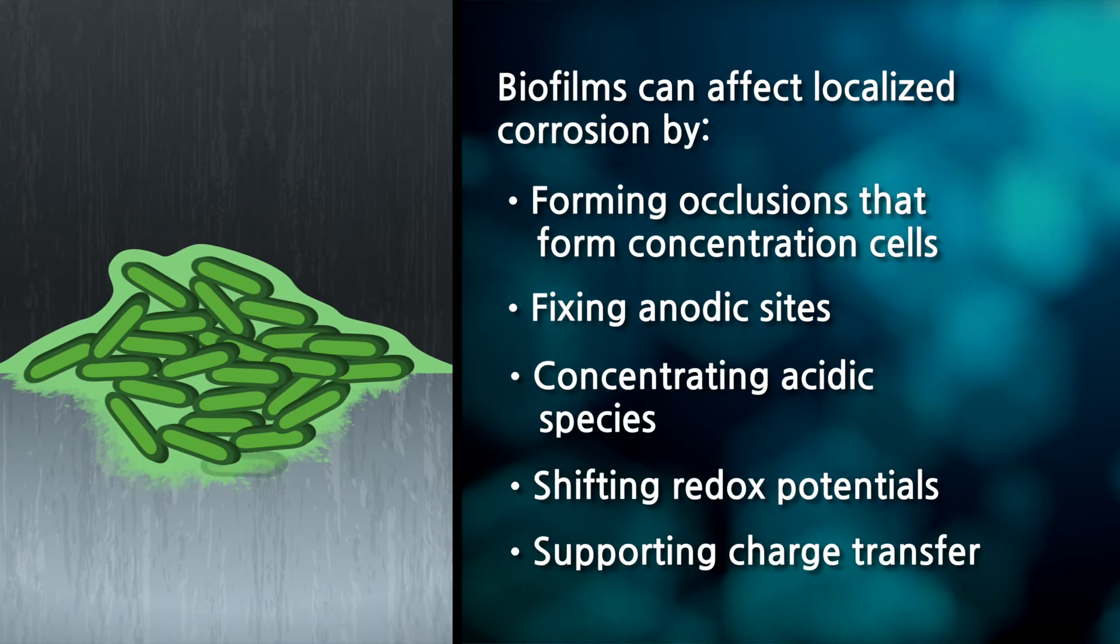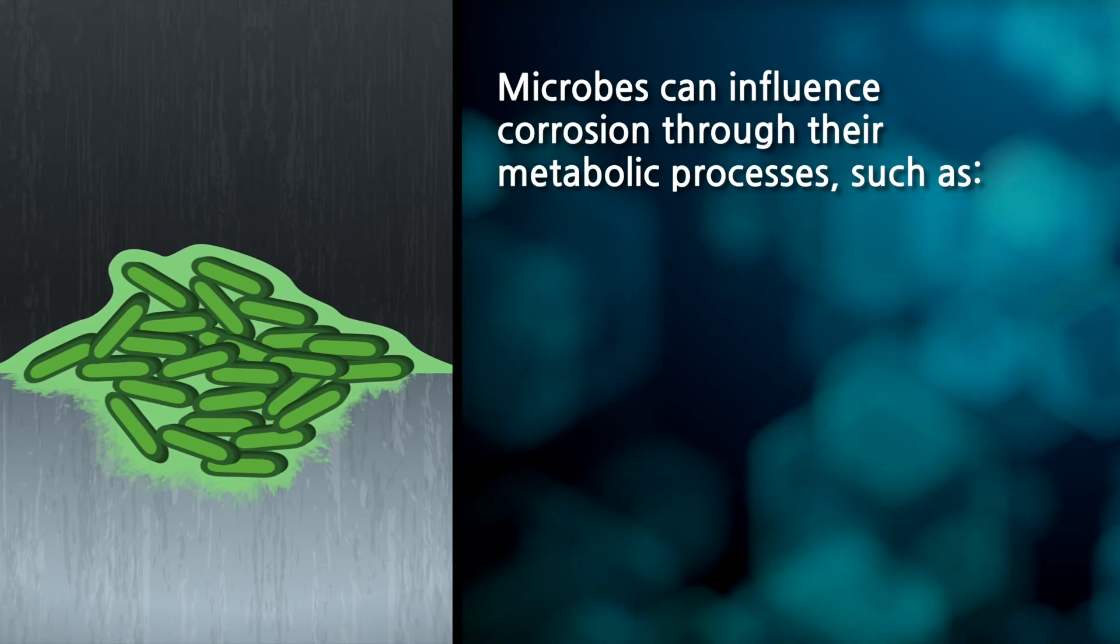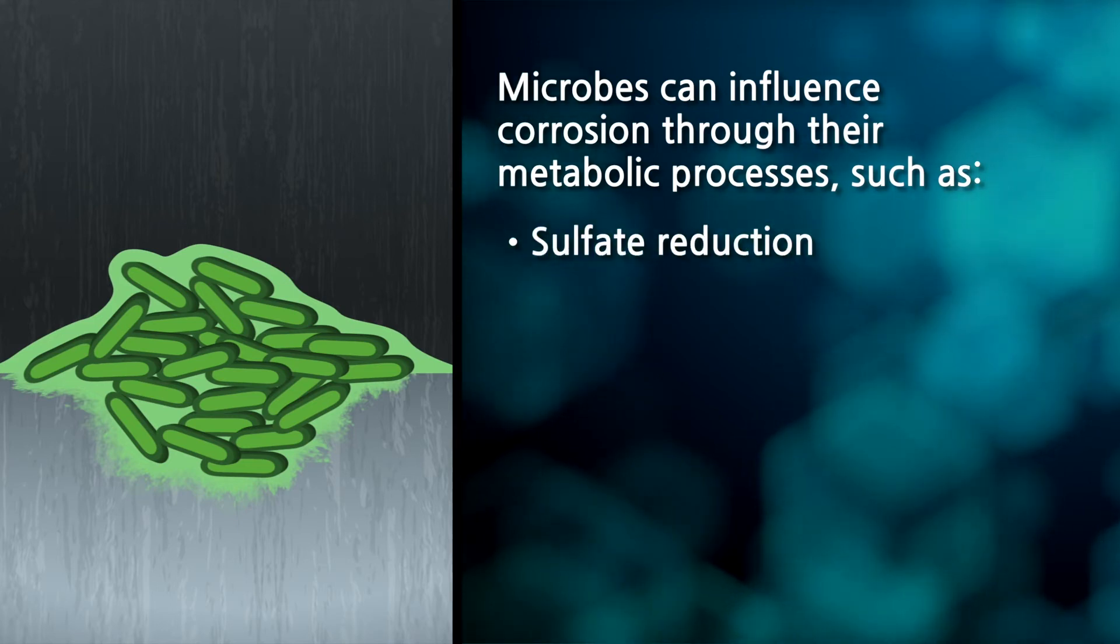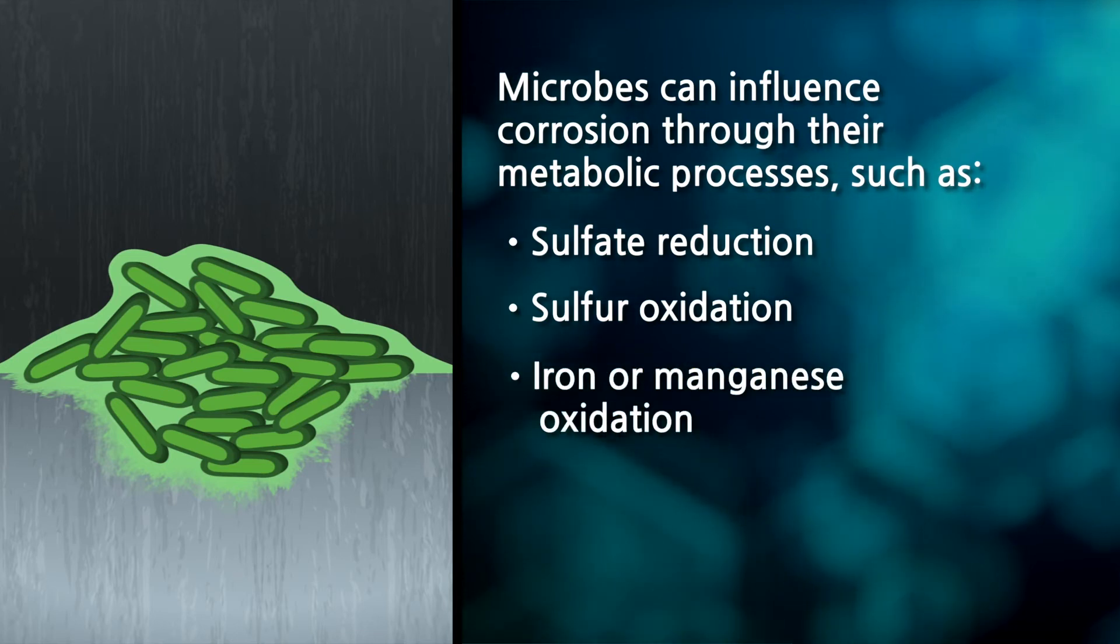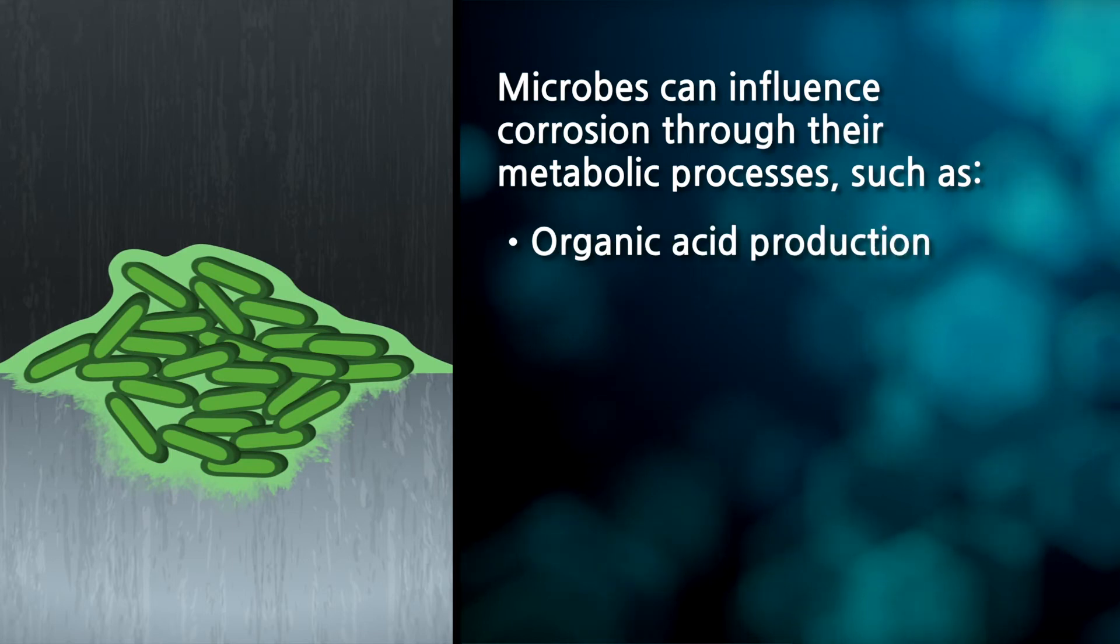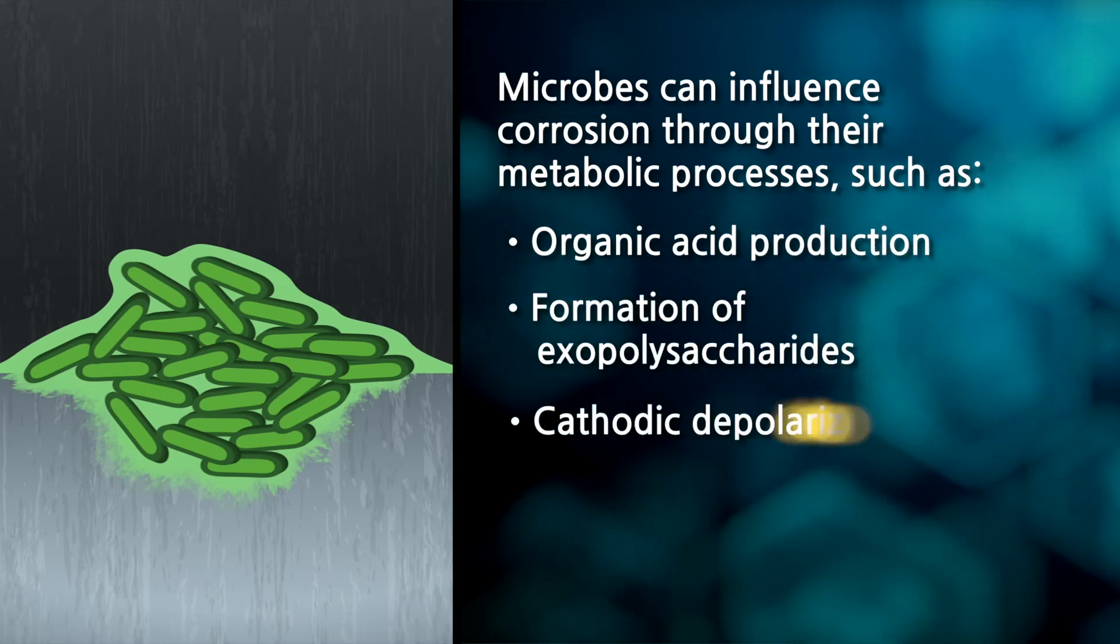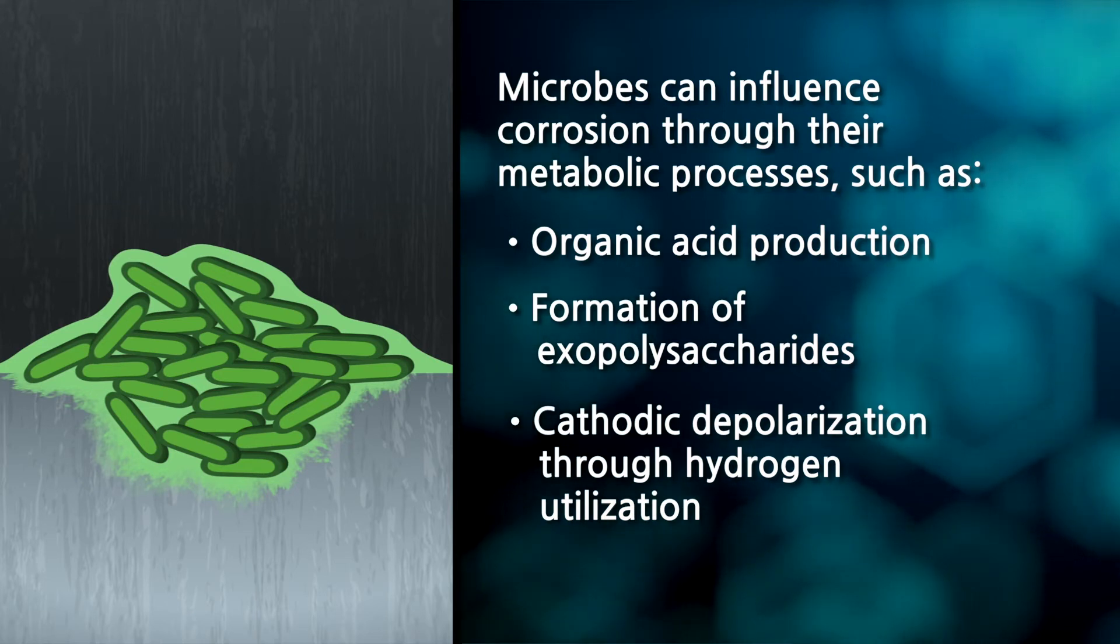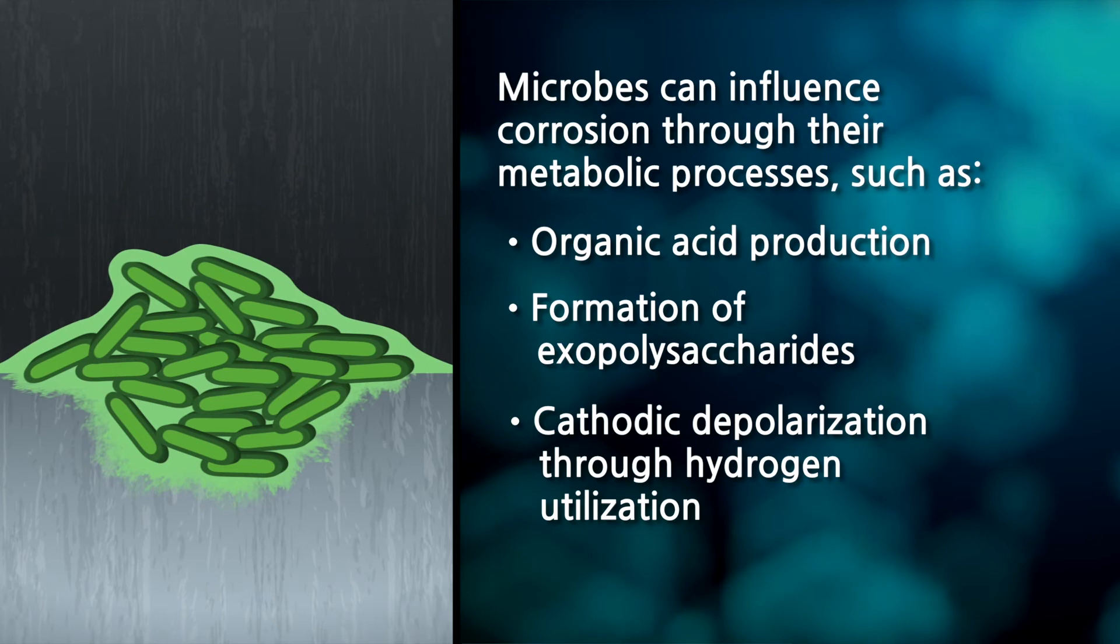Depending on the physical and chemical conditions in the environment and the microbial consortia supported by those conditions, microbes can influence corrosion through their metabolic processes such as sulfate reduction, sulfur oxidation, iron or manganese oxidation, iron reduction, organic acid production, formation of exopolysaccharides, and cathodic depolarization through hydrogen utilization. The biofilm itself can help facilitate these processes.